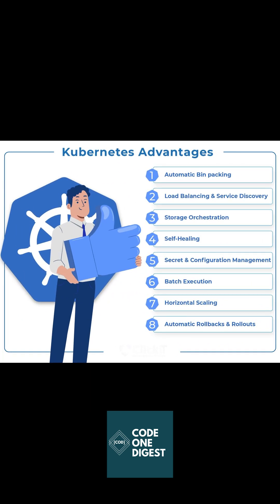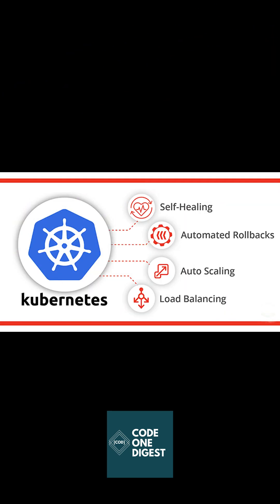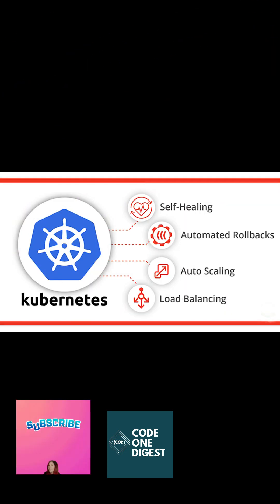Kubernetes is very useful to DevOps teams as it offers service discovery, load balancing, automatic rollout and rollback, self-healing of failed containers, and configuration management. The major benefits of Kubernetes are: it automates container orchestration, automates scale up and scale down, has strong open source communities, and offers cost effectiveness and savings.